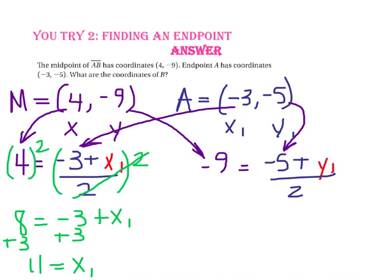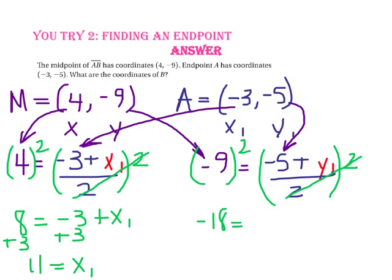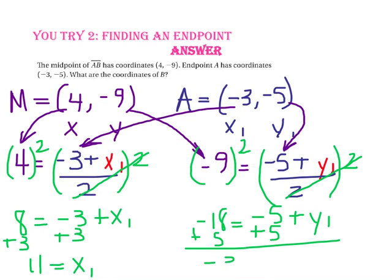Now let's find the y-coordinate. Multiply both sides by 2 to eliminate the denominator. Negative 9 times 2 is negative 18, and the 2s cancel to leave negative 5 plus y₂. Adding 5 to both sides gives negative 13 equals y₂. So the ordered pair for endpoint B is (11, negative 13).